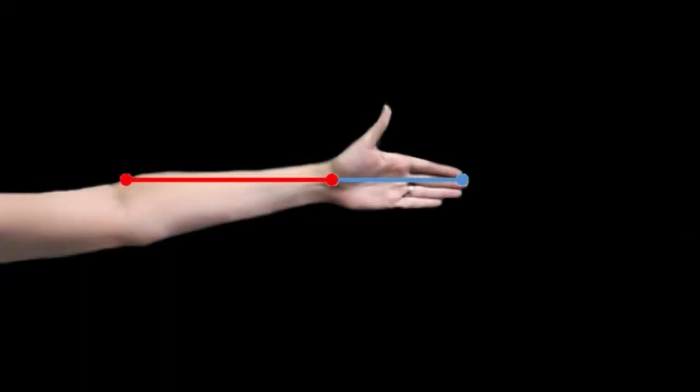Breaking it down even further, the divisions from the elbow to the wrist and the wrist to the tips of the fingers is also a perfect 1 to 1.6 ratio.